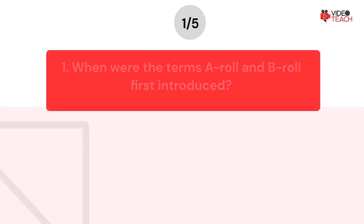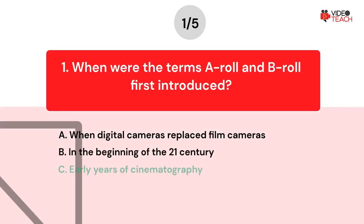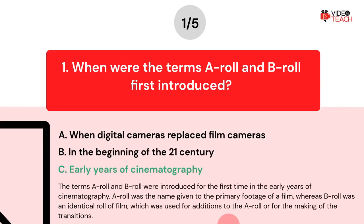The correct answer is C. The terms A-Roll and B-Roll were introduced for the first time in the early years of cinematography. A-Roll was the name given to the primary footage of a film, whereas B-Roll was an identical roll of film which was used for additions to the A-Roll or for making transitions.